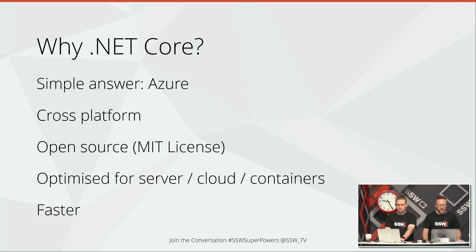With .NET Core they've gone full open source — it's on GitHub with the MIT license, a well-known open source license rather than a Microsoft-made one. So what does that mean for .NET Core? It's optimized for server, for cloud, and for containers. Because it runs on Linux now, it runs very well on containers, which is the future of deployment, and it's also much faster and more efficient.